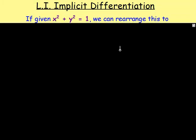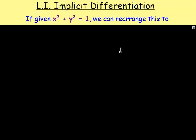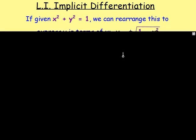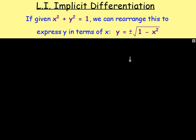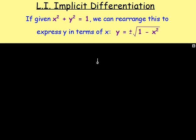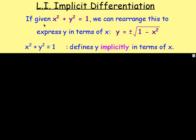Let's say I asked you to differentiate x squared plus y squared equals 1. Well, the first thing you'd probably think is: I need to rearrange that to get y equals. If you rearrange that, you would have y equals plus or minus the square root of 1 minus x squared. When it's in the form x squared plus y squared equals 1, you can say that defines y implicitly in terms of x — in other words, you've got x's and y's on the same side.